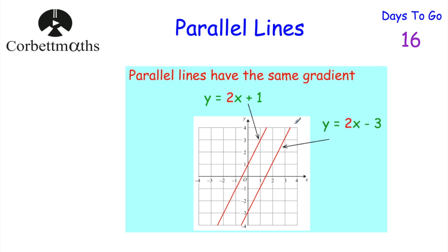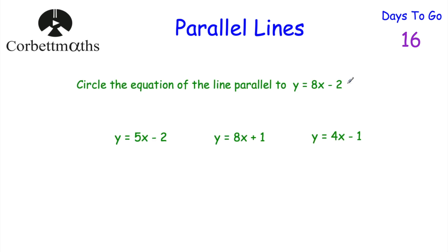That's an important fact to remember, so write it on your windows if you need to with your window pens, or take the Code Maths revision card and make sure you remember it. Okay, let's have a look at our first question. The first question says: circle the equation of the line that is parallel to y equals 8x subtract 2. Feel free to pause the video and think which of these three lines is parallel to y equals 8x subtract 2.